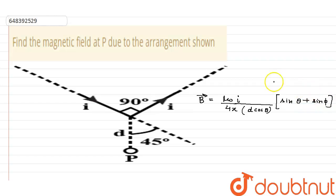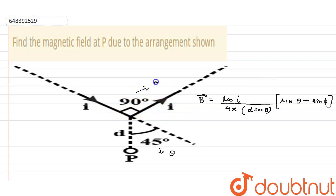From the figure, the value of current is I. The angle θ is 45 degrees — it is the angle between the line joining the point to the wire end and the perpendicular. The angle φ is 90 degrees, as it is the angle at the other end between the two current directions.